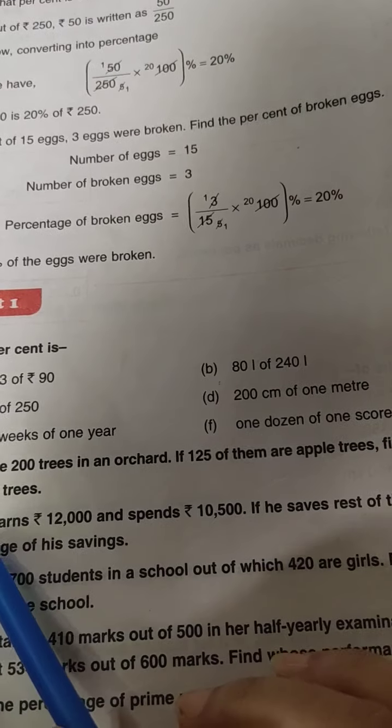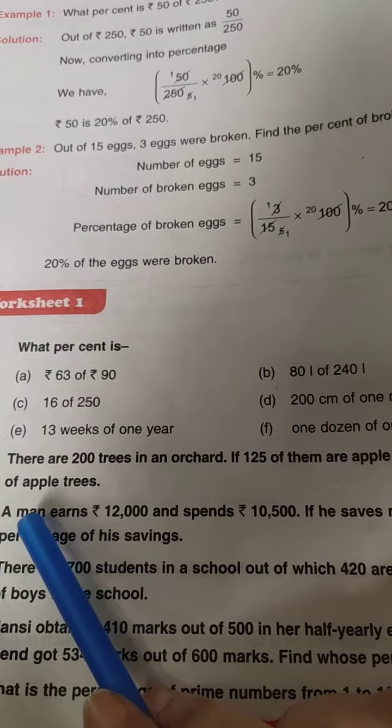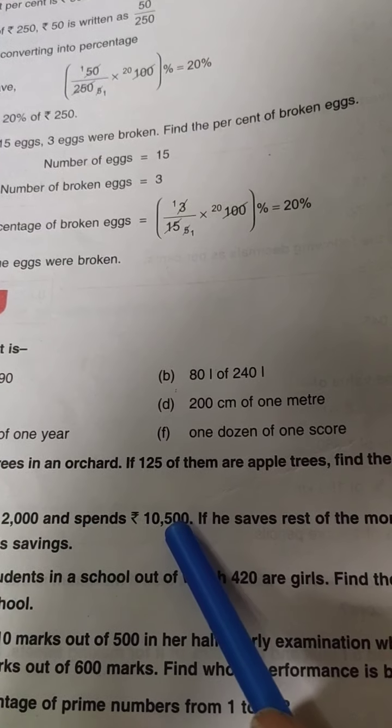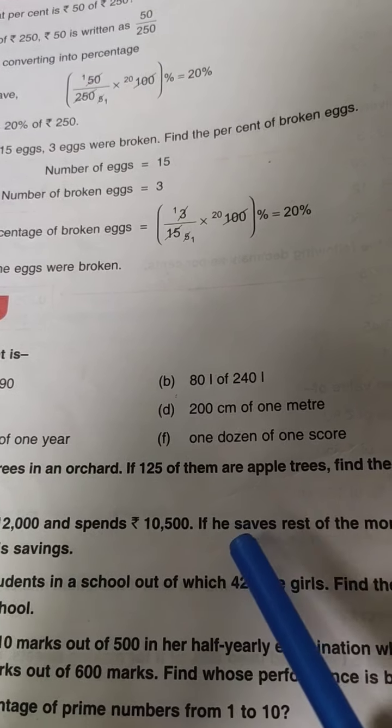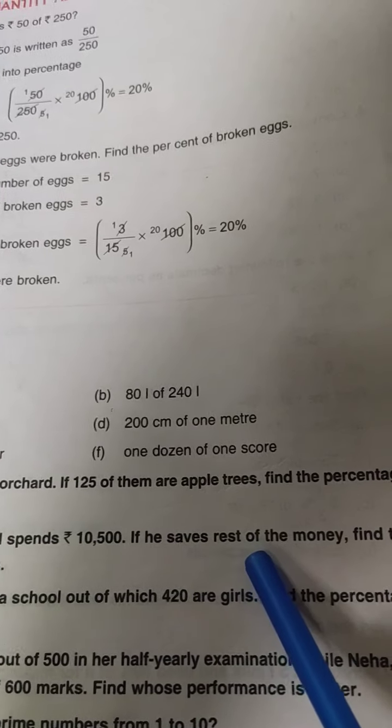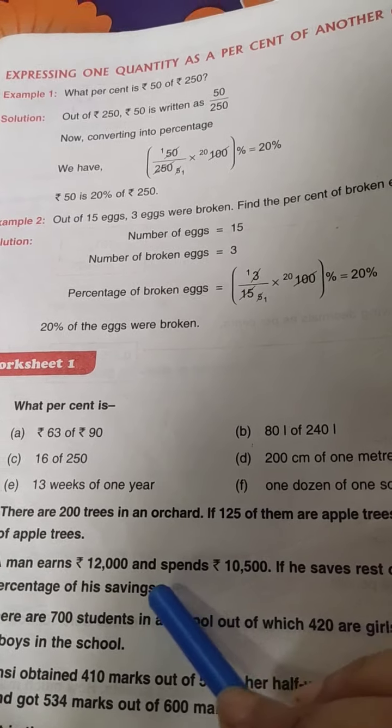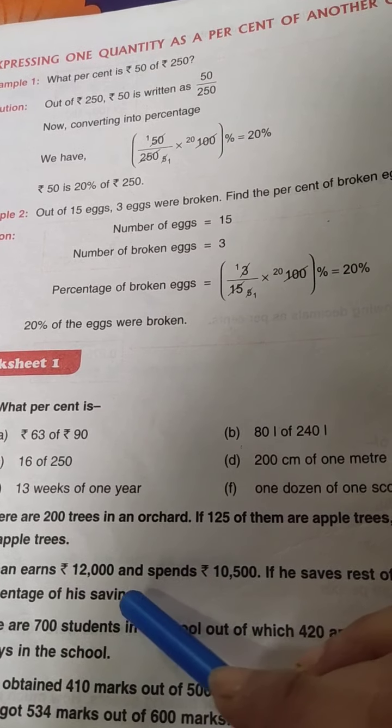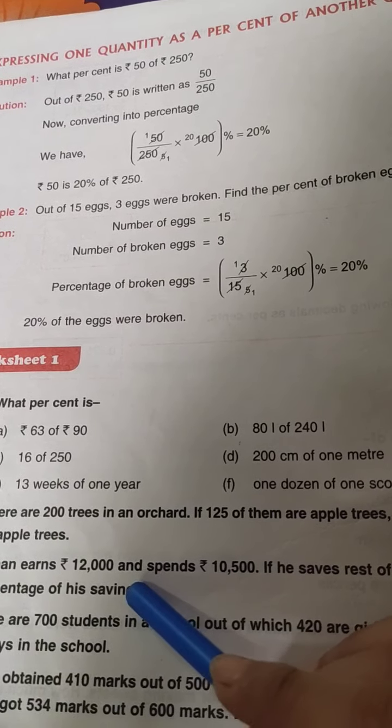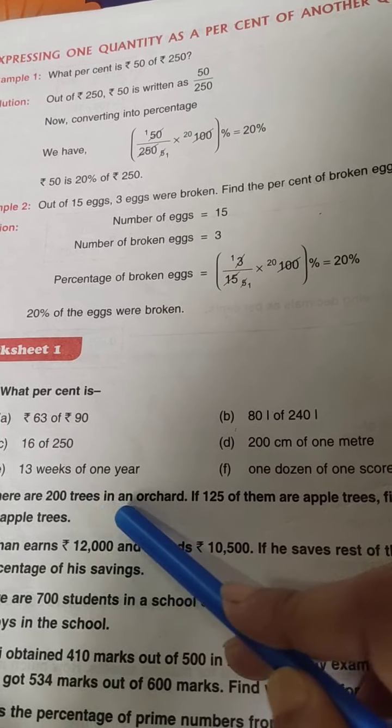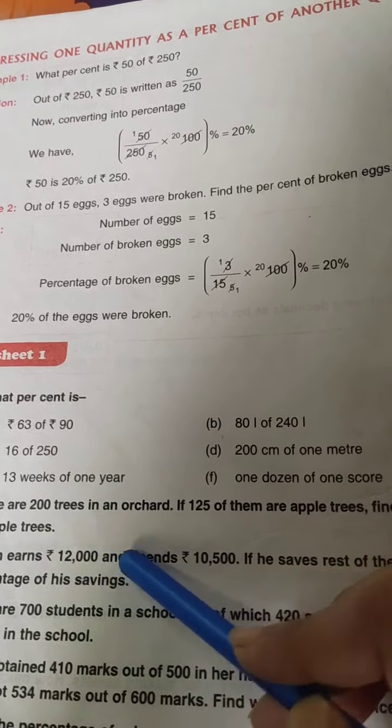Suppose we are taking one more example, question number 3. A man earns rupees 12,000 and spends 10,500 rupees. If he saves rest of money, find the percentage of his savings. So you have to find the percentage of savings. So you must find the savings first. Then saving will be the numerator, total earning—that means 12,000—will be the denominator, and you have to multiply that fraction with 100.